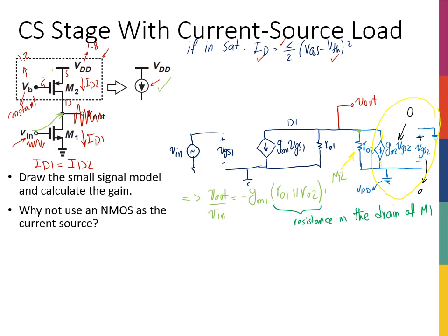The next part of this question is asking us, why not use an NMOS as the current source? Try to pause the video and think about why an NMOS is not used for M2. I haven't used an NMOS and the answer is that it doesn't give us a current source.